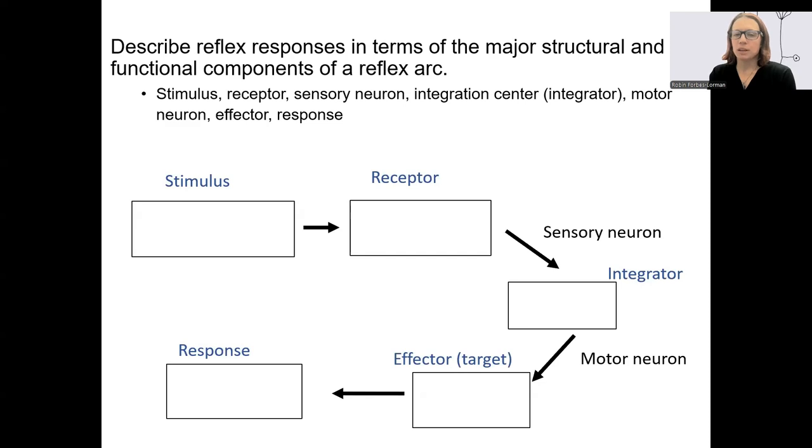Here we go. So we should know these terms. Input signal is a sensory neuron. Output signal is the motor neuron.